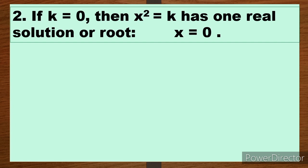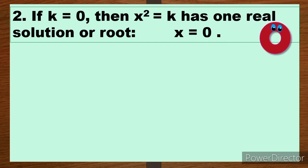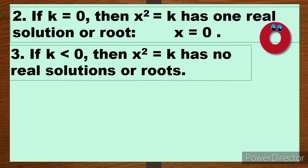Next, the second property: if k is equal to 0, then x² = k has one real solution or root. There will be only one root or solution when k is 0, and that is x = 0. Zero is the only solution.